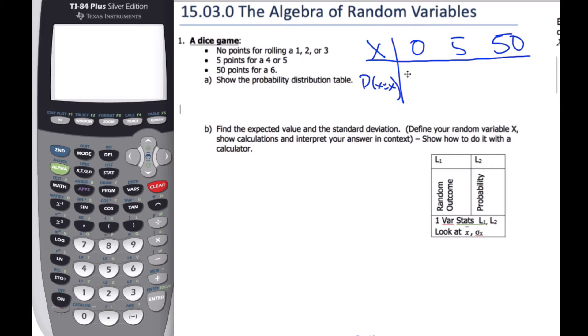And I know the rolls gives me my probability. So I can get zero points half the time, five points two out of six or one third, and 50 points one out of six. So here's my probability distribution table.